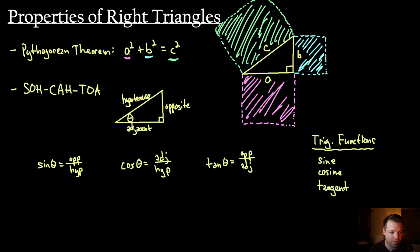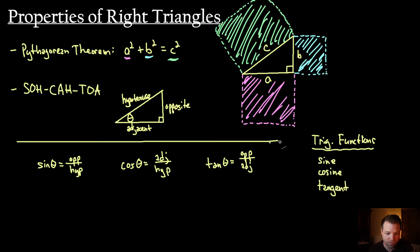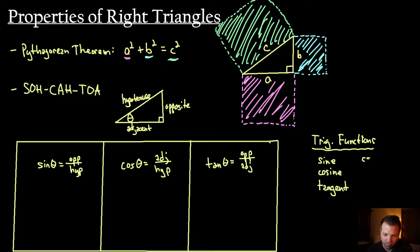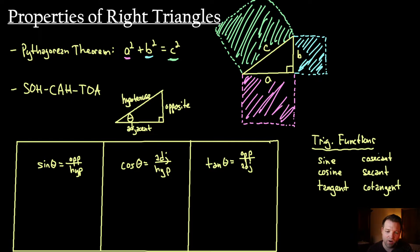You've probably already seen this before, it's probably not news to you. But what we are going to do now is extend these three trigonometric functions to the next three. The next three we're going to talk about are going to be the cosecant, the secant, and the cotangent. These are known as the six basic trig functions, and they really are paired with each other. Sine is paired with cosecant, cosine is paired with secant, and tangent is paired with cotangent.